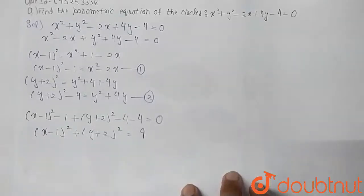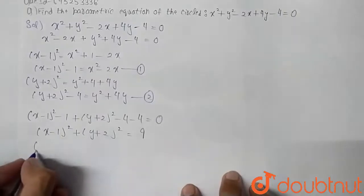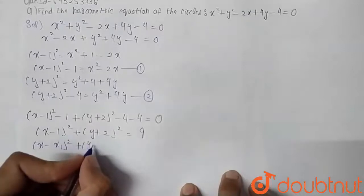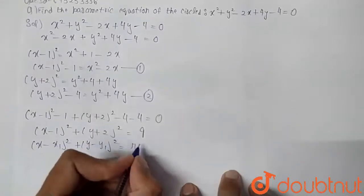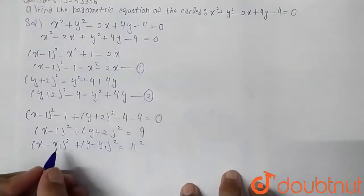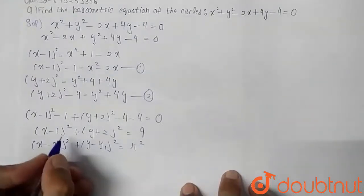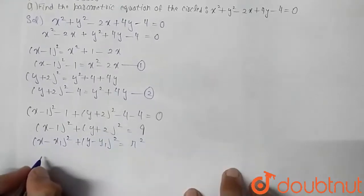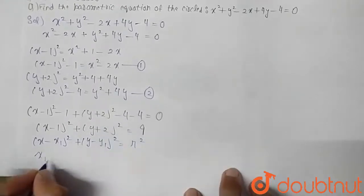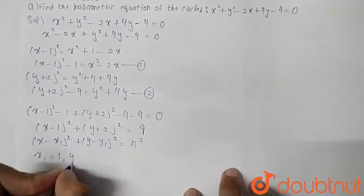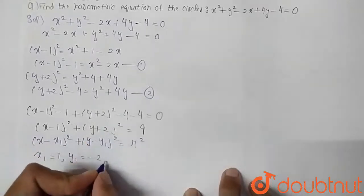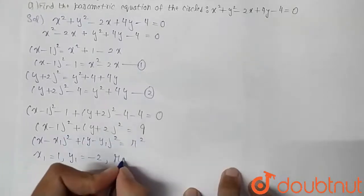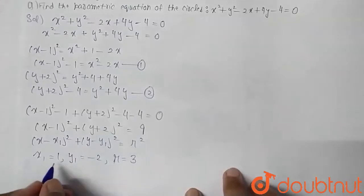Comparing with the general equation of a circle (x - x₁)² + (y - y₁)² = r², we identify the center coordinates: x₁ = 1 and y₁ = -2. From r² = 9, we get r = 3.